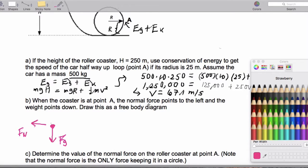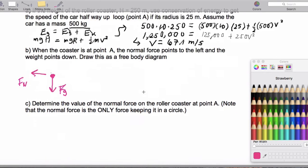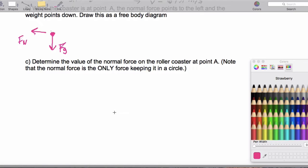Now we've got to determine the normal force on the roller coaster. And the way that's going to work is it turns out the normal force is the only force keeping the roller coaster moving in a circle.